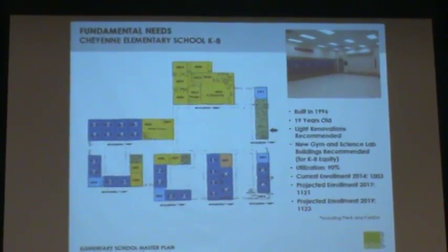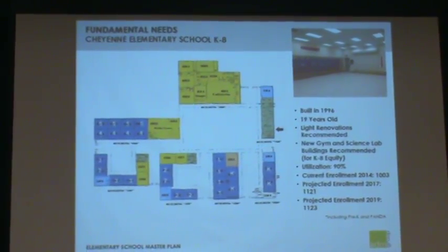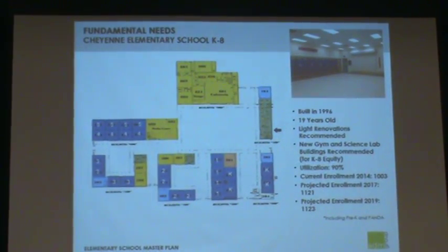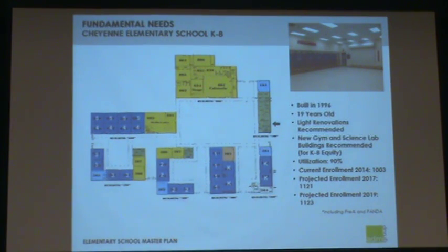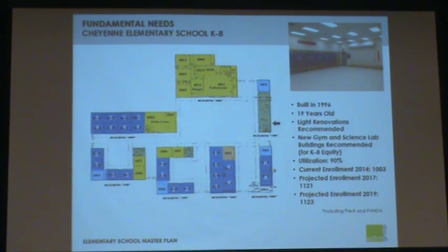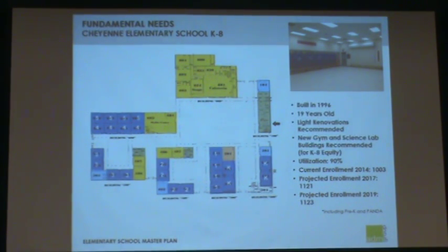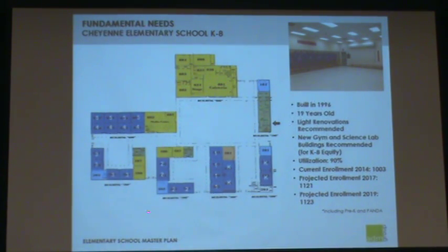Cheyenne Elementary School was built in 1996, it's 19 years old, and light renovations are recommended. It started as a K-5 school and is now K-8. The current PE room is quite small, so we recommended a new gym and science lab building be built on that campus to bring equity up to other K-8 schools. Utilization is very good at 90%. Current enrollment as of November 2014 is 1,003. Projected enrollment for 2017 goes up to 1,121 and in 2019 to 1,123.